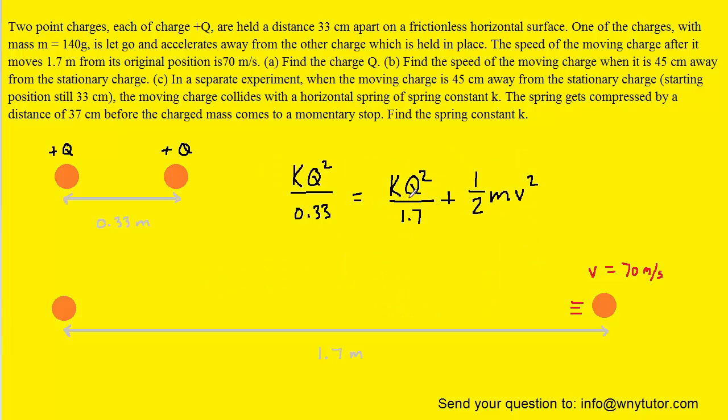We're trying to solve for Q, so it might be helpful to subtract this term over to the left-hand side of the equation. On the right-hand side, we fill in the mass of the particle. We have to use kilograms instead of grams, so that's 0.14 kilograms. The speed is 70, so we plug that in as well.